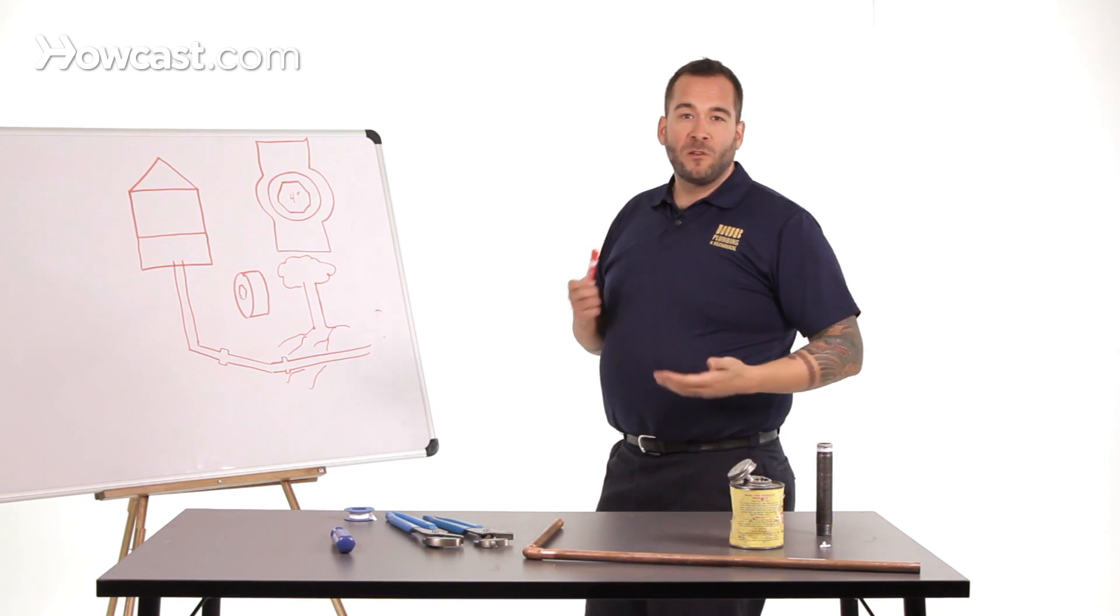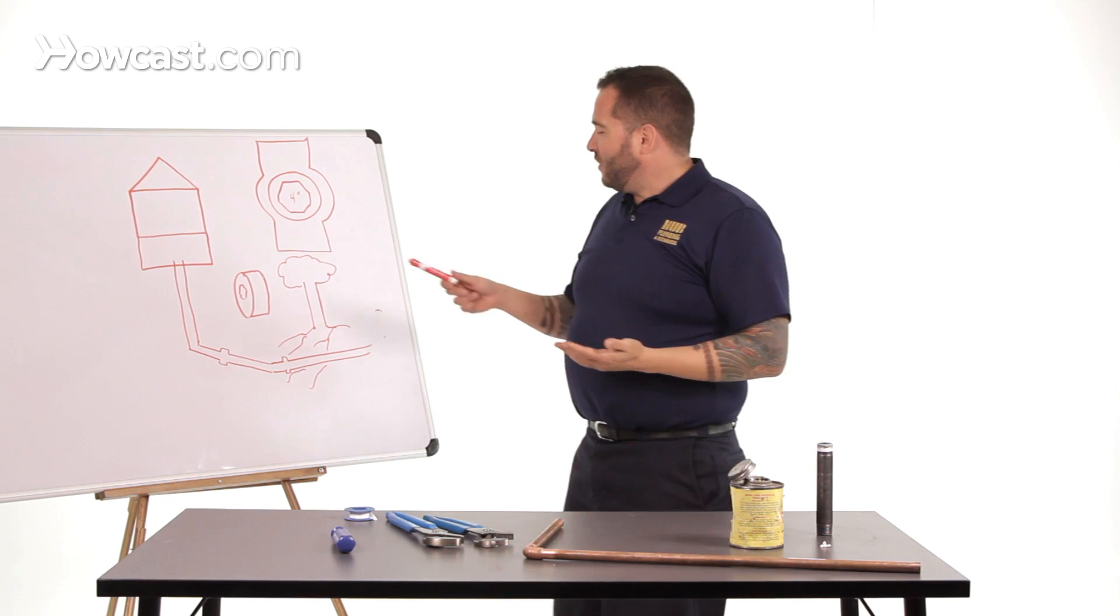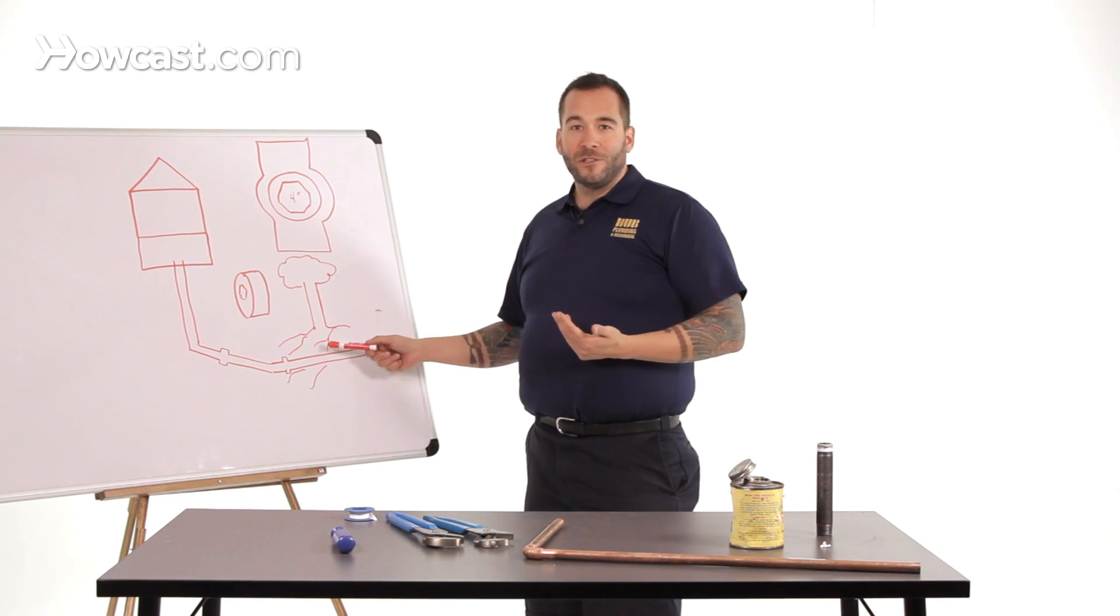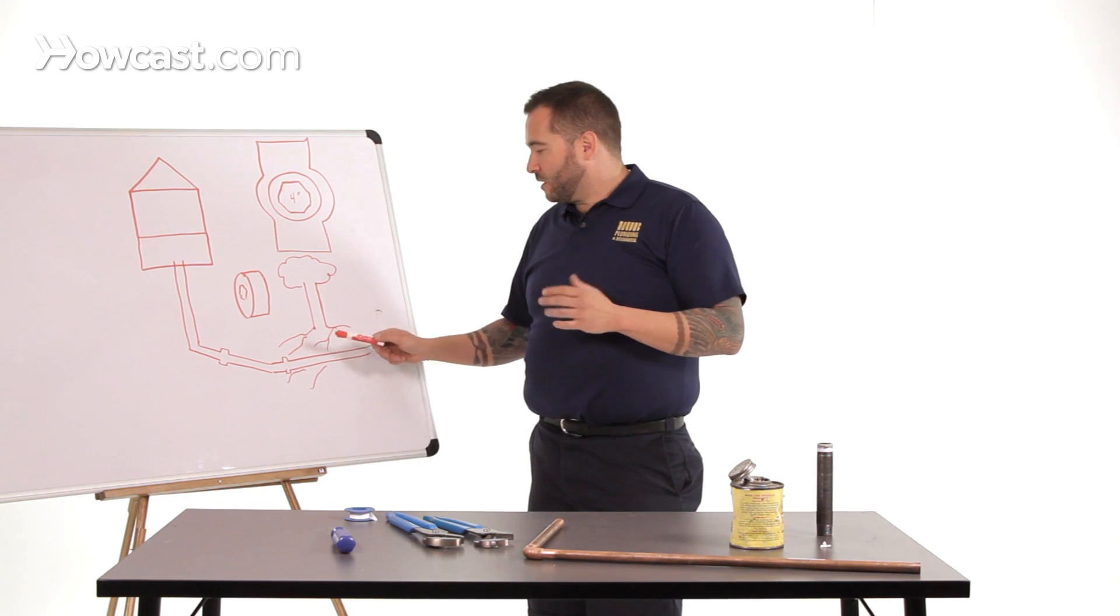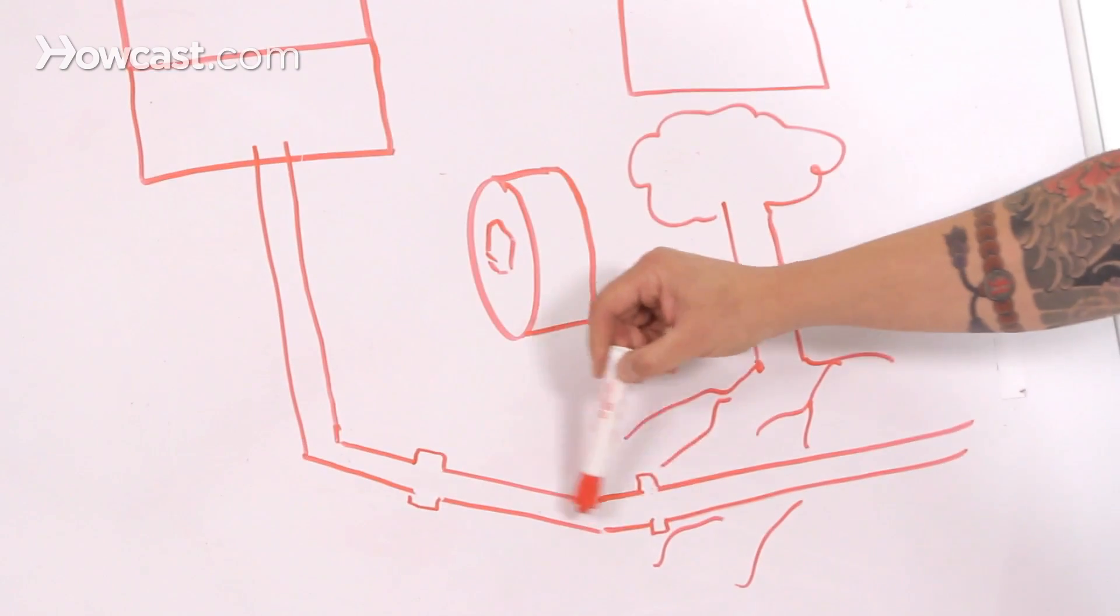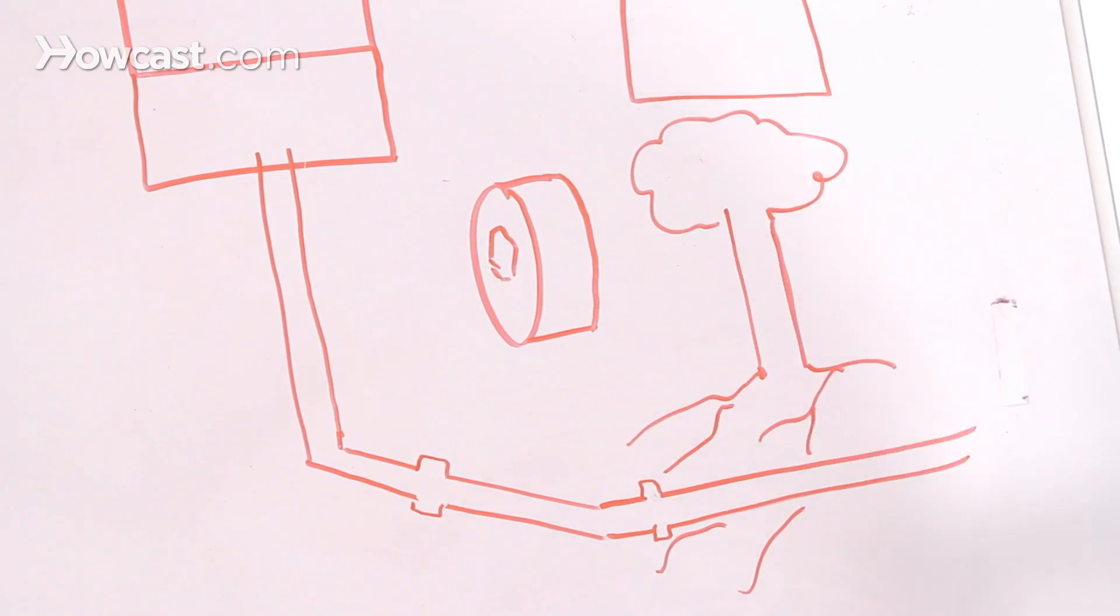What happens a lot of time, because of the weight of the earth above them and the enormous power of tree roots, which is just incredible, you get a belly or what we call in the trade a sag in the line.